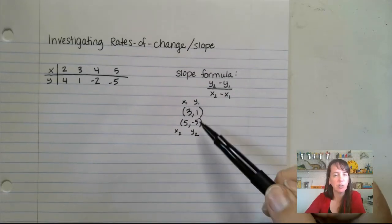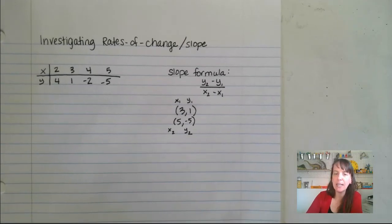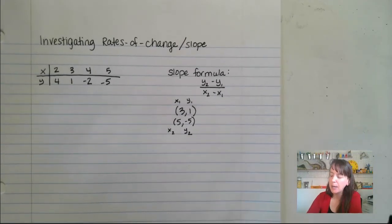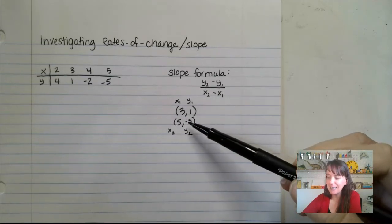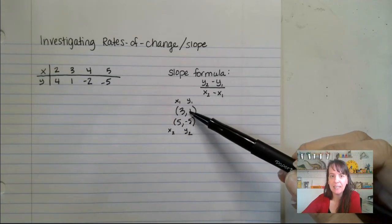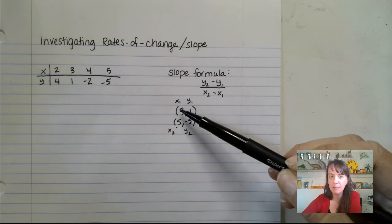You'll notice, like I said, I'm a visual learner, so I stacked my points here. I find that to be more helpful than just seeing them side by side, because what we do is y2 minus y1. That's this minus this over this minus this.